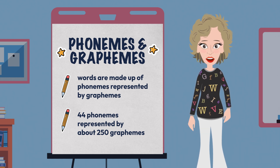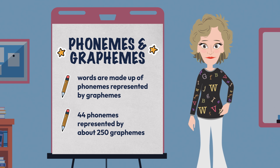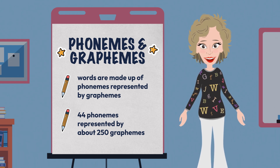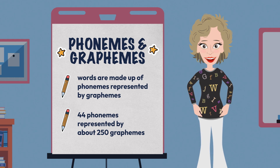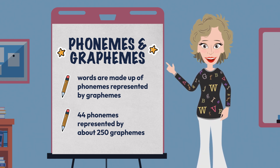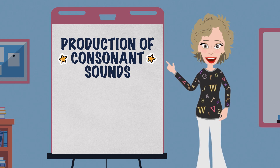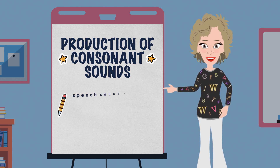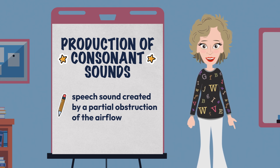We then embarked on a journey related to sound production and the fact that it is all about how the airflow moves from our lungs out of our mouth or nose. We started with the production of consonant sounds and defined a consonant as a speech sound created by a partial obstruction of the airflow.